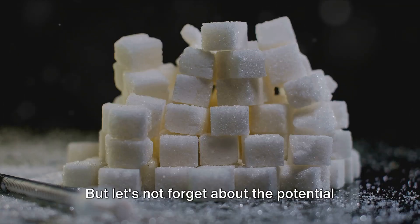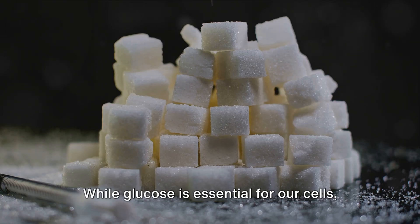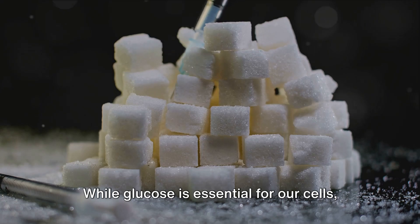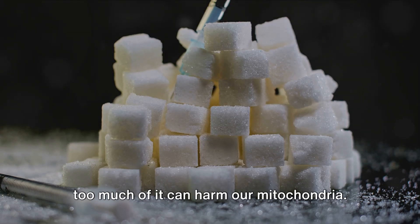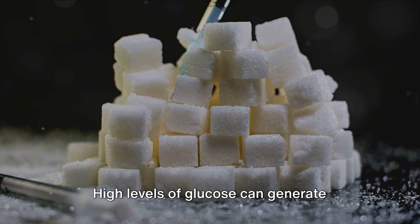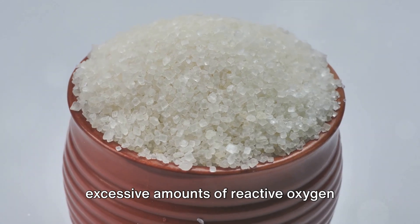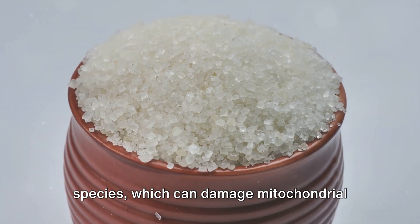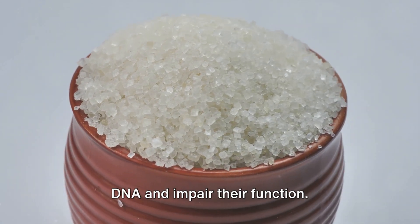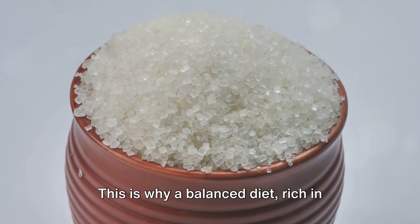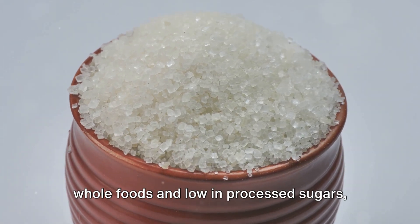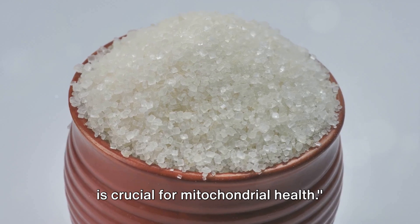But let's not forget about the potential dangers of excessive glucose. While glucose is essential for our cells, too much of it can harm our mitochondria. High levels of glucose can generate excessive amounts of reactive oxygen species, which can damage mitochondrial DNA and impair their function. This is why a balanced diet, rich in whole foods and low in processed sugars, is crucial for mitochondrial health.